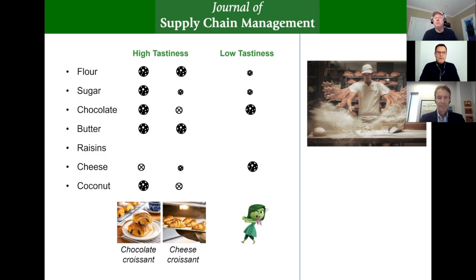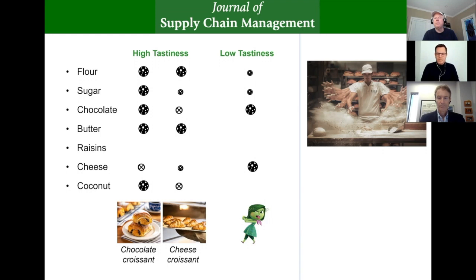Something high in flour, sugar, butter, chocolate, and coconut but with no cheese is probably a nice chocolate croissant. Whereas something high in flour, butter, modest sugar, and cheese but with no chocolate or coconut might be a cheese croissant. And something low in flour and sugar but high in chocolate and cheese is probably not overly tasty. Tastiness is our outcome variable, akin to the dependent variable in linear studies, and the ingredients are the causal conditions, akin to the independent variables.